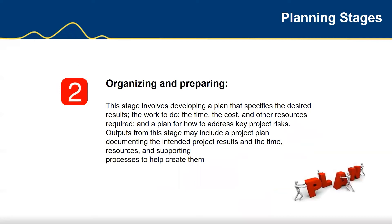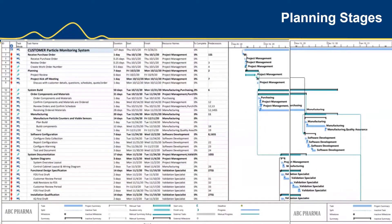Stage two involves developing a plan that specifies the desired results, the work to do, the time, the cost, the other resources required, and a plan of how to address key project risks. Outputs may include a project plan documenting intended project results and the time, resources, and supporting processes to help create them. Here we have an example of an EMS project management Gantt chart. Gantt charts are used and each aspect of the various stages and timelines should be reviewed. The draft commissioning and validation documents should be issued, and it is critical that there is sufficient time for review and sign-off. Having all your ducks lined up will help you move into the installation stages more smoothly.